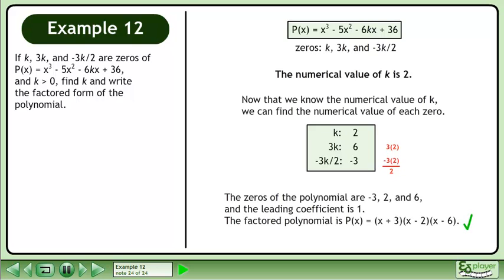The zeros of the polynomial are -3, 2, and 6, and the leading coefficient is 1. The factored polynomial is P(x) = (x + 3)(x - 2)(x - 6).